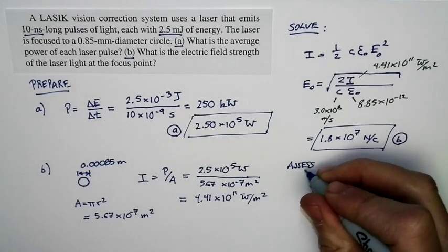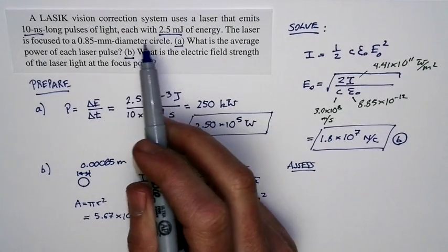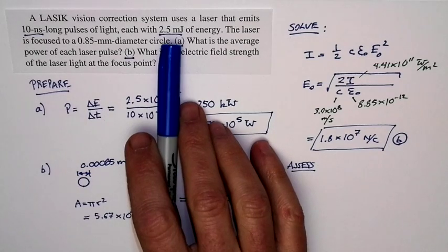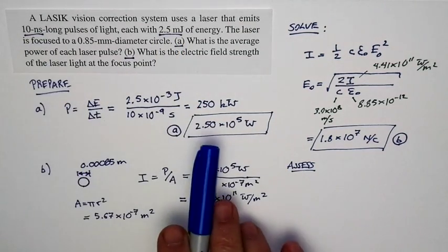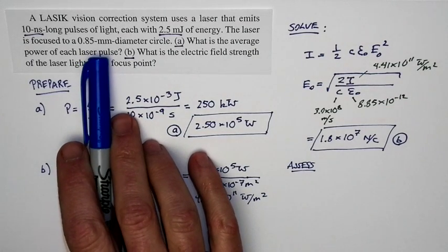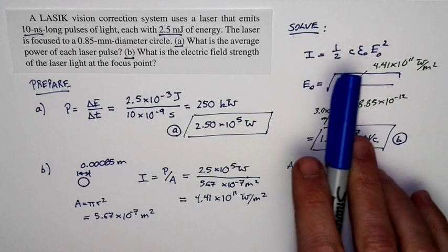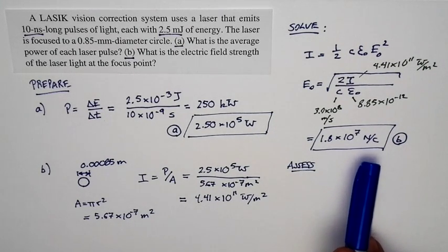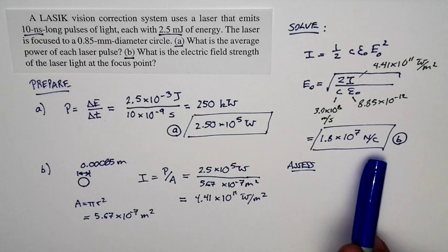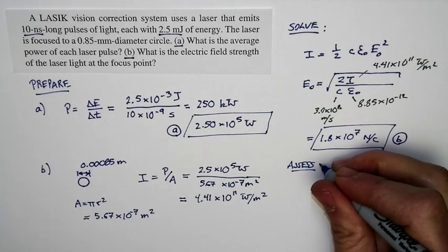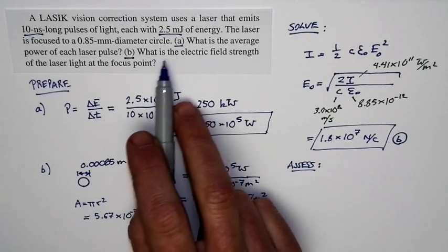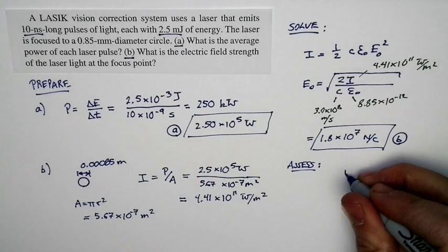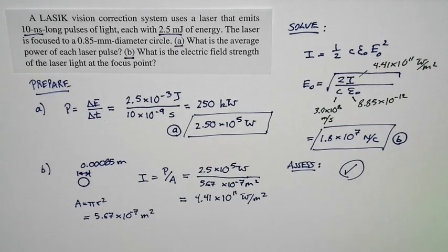Let's do an assessment. We're using the laser to ablate layers of the cornea, so we expect this to be a pretty dramatic process. It's actually a relatively modest amount of energy, but it's in a very short time, so we get a huge power. And it goes into a very tiny circle, so we have a very large intensity. The intensity is related to the strength of the electric field. So for a very large intensity, we expect a very large electric field. The result we get is actually larger than the electric field necessary to ionize air. So this is a very large electric field indeed. And so our answer says that if you can do something dramatic, like ablating layers of someone's cornea, you're going to need a very large power, a very large intensity, and therefore a very large electric field. And so our answer matches our expectations of how the world works.